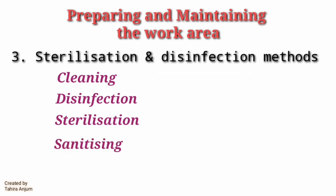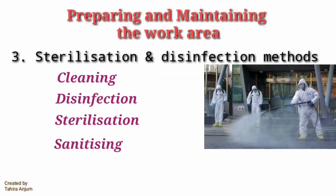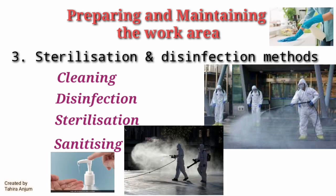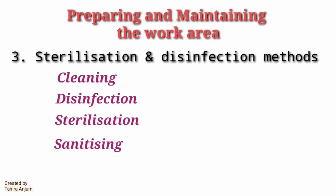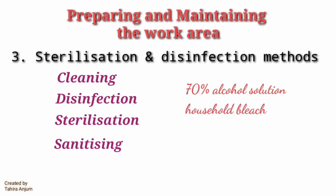The last method is sanitizing. Especially since COVID, we use heat and chemicals to completely kill germs. In this process, we use 70% alcohol solution and household bleach, which contains 4% chlorine.